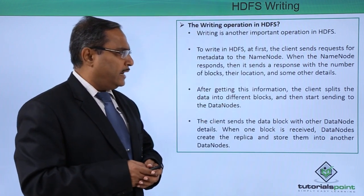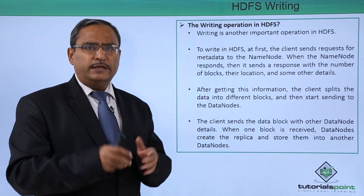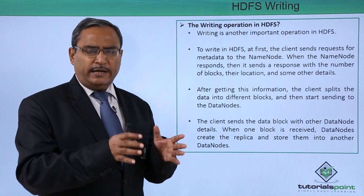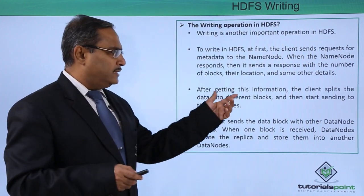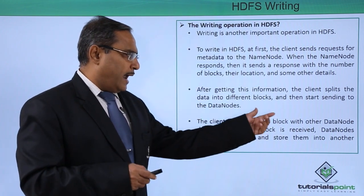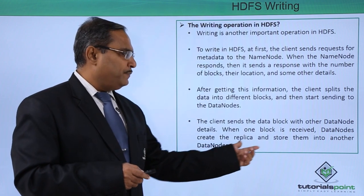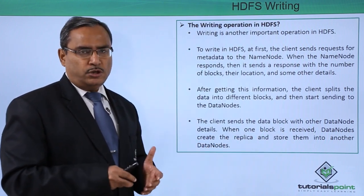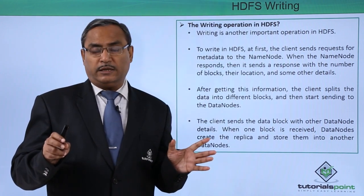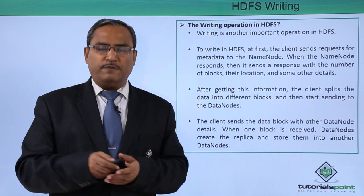After getting this information, the client spreads the data into multiple different blocks. The default block size is 128 MB, though it can be changed. After getting all this information from the NameNode, the client splits its data into multiple blocks and starts sending them to the DataNodes. The client sends the data block along with details of other DataNodes, and when one block is received, the DataNodes create replicas and store them on other DataNodes.